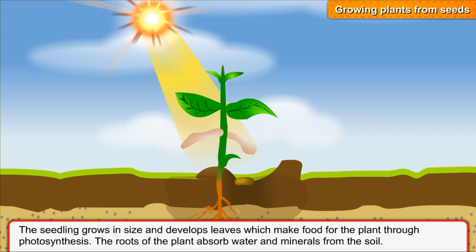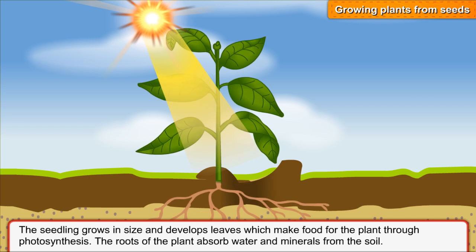The seedling grows in size and develops leaves, which make food for the plant through photosynthesis. The roots of the plant absorb water and minerals from the soil.